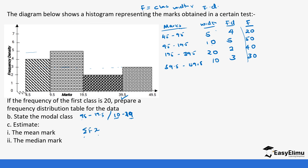To estimate the mean mark we need the sum of fx over the sum of f. That means we need the midpoint x for each class, calculated as upper limit plus lower limit divided by 2. For 4.5 to 9.5: 9.5 plus 4.5 divided by 2 gives us 7. For 9.5 to 19.5: 19.5 plus 9.5 equals 29, divided by 2 gives 14.5.